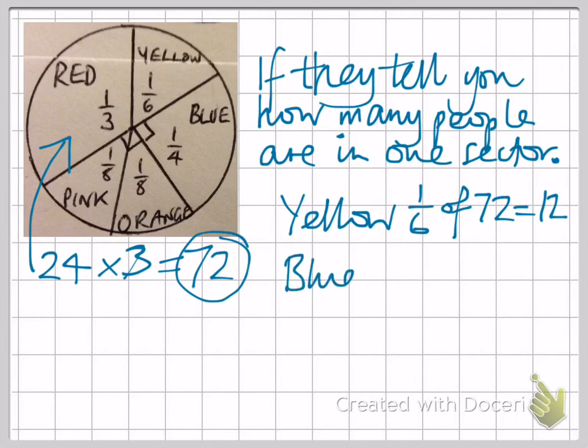If we wanted blue, we'd need one quarter of the 72. 72 divided by 4 would give you 18.